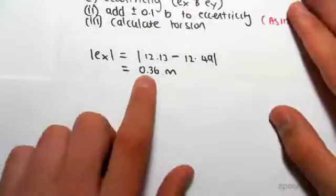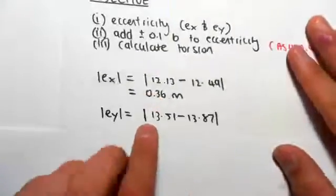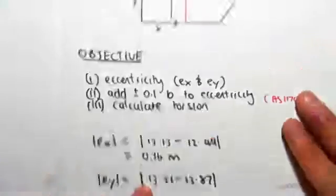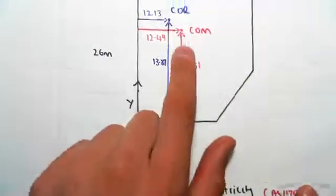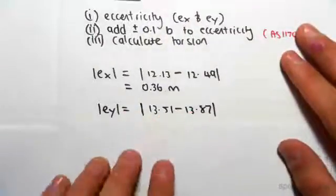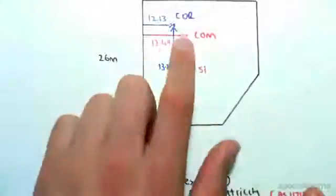We're going to do the same thing for the y direction. The eccentricity between the center of mass and center of rigidity is going to be 13.51 minus 13.87. Taking the absolute value of that, we get 0.36 meters. So in either direction, x and y, the eccentricity is 0.36 meters.